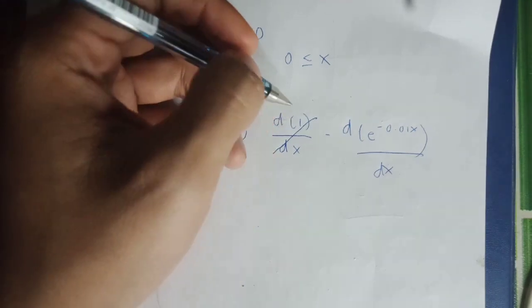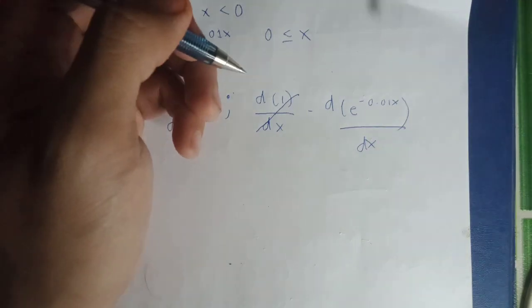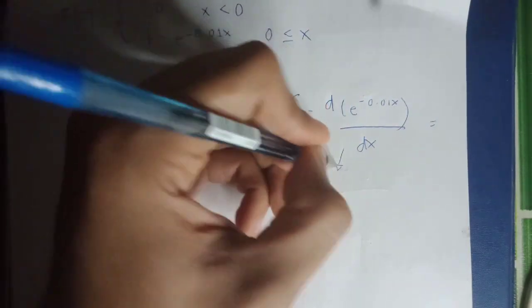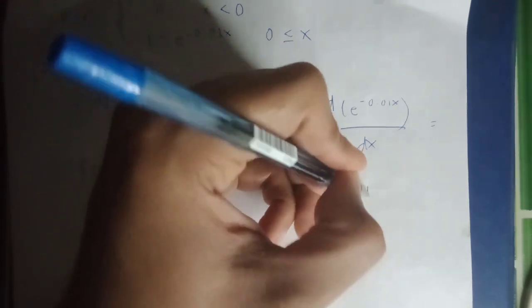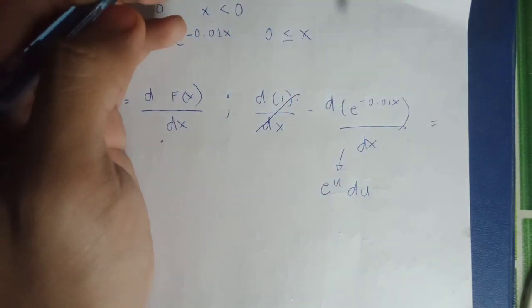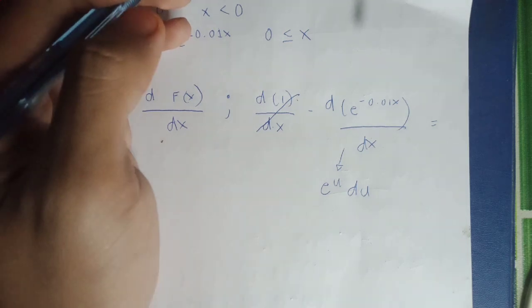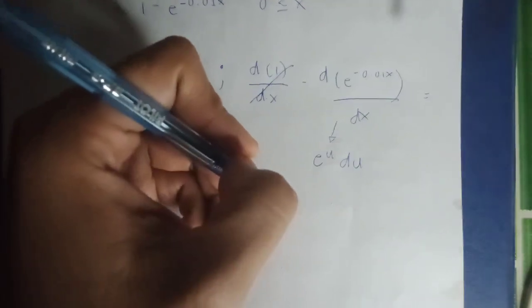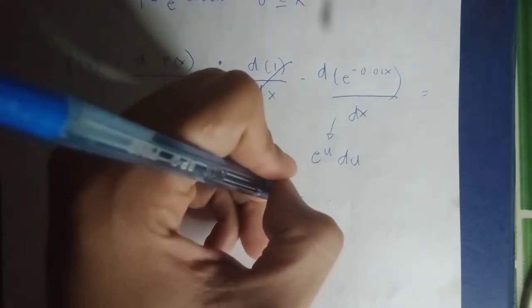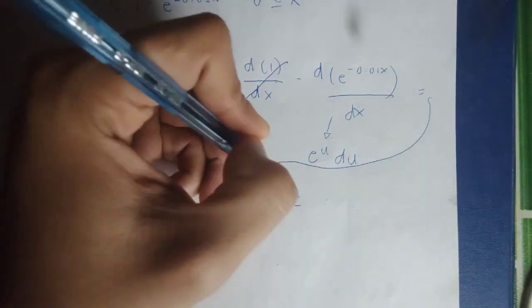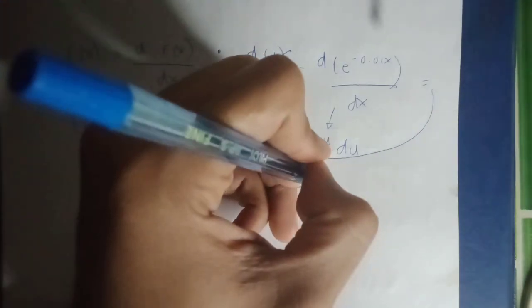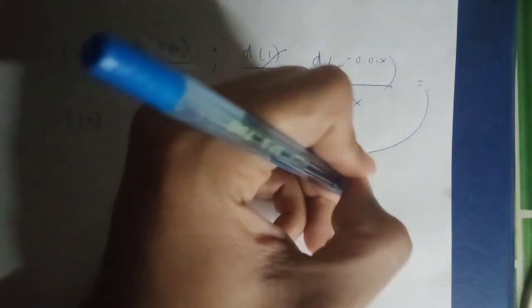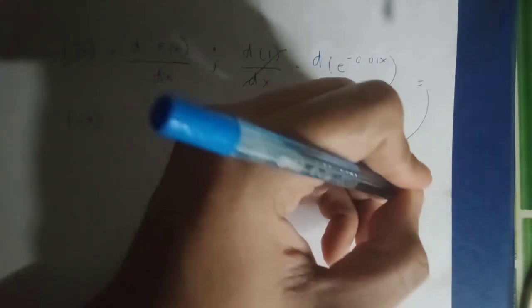For the derivative of 1 minus e raised to negative 0.01x is d(1)/dx minus d(e raised to negative 0.01x)/dx. Na magiging e raised to u, du na magiging derivative niya is negative e raised to negative 0.01. And for the derivative of u, which is negative 0.01x, is derivative of negative 0.01x.